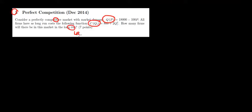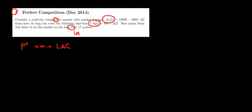Recall the criteria for the long run: the price in long-run equilibrium is going to be the minimum of the long-run average cost. So what we're interested in is the long-run average cost and minimizing that function. We already have the total cost function for a specific firm.